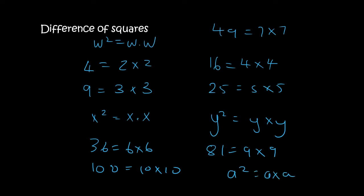All of these things that I'm showing you on the screen are called squares. So 9 is a square number because 3 times 3 is 9, and 4 is a square number because 2 times 2 is 4.